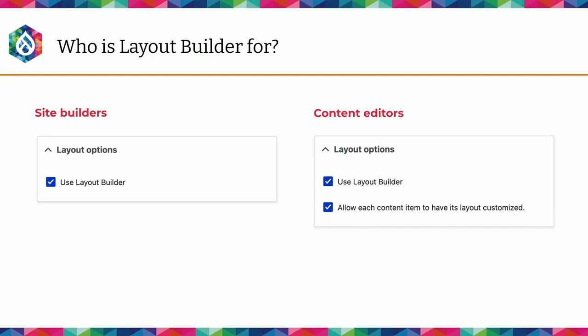Anything you make in the default layout is part of configuration. So if you're committing your configuration to a repository, you'll need to do that after making changes there. On the default layout, site builders can place layouts and sections — those terms can be used interchangeably. You'll hear 'section,' you'll hear 'layout' — they're essentially the same thing when you're on the Layout Builder page. You can place blocks, and all entities created of that bundle will use that default layout.